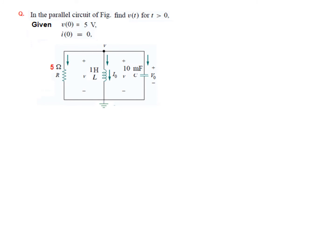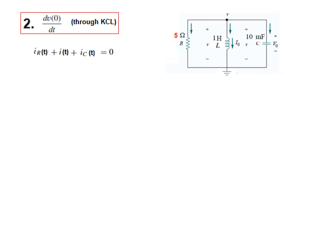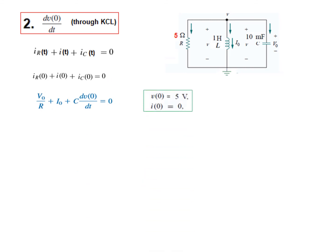Now let's do another example — exactly the same question except the resistance is changed to 5 ohms. Following similar steps: V(0) and I(0) are given. For step 2, applying KCL at t = 0, with the resistance now being 5 Ω, the only change is in the IR term, and consequently dV(0)/dt is now −100 V/s.